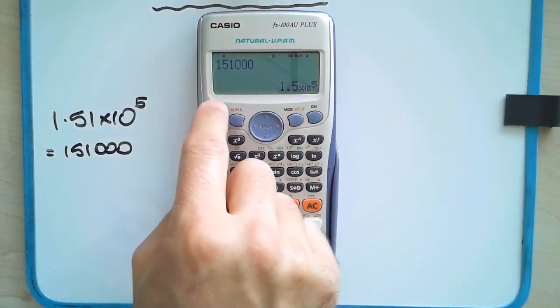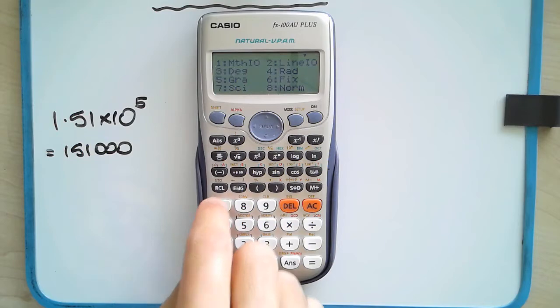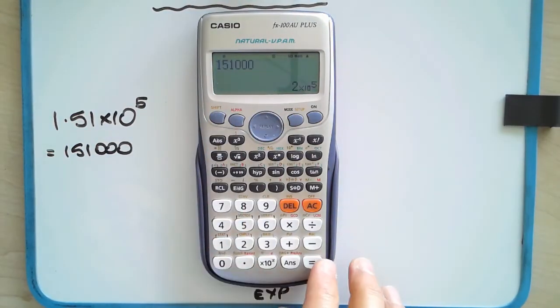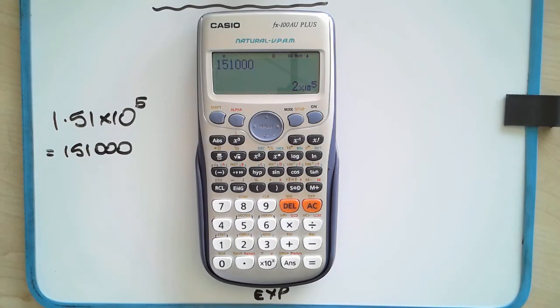So again, shift, setup, SCI, number seven, press number one. And you get, it gives you the answer. In fact, I have to press equals, two times 10 to the power of five. So extremely useful.